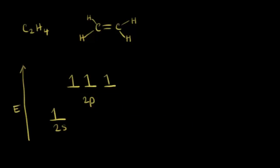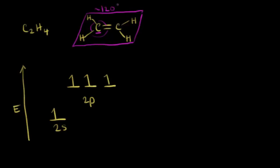In an earlier video, we saw that when carbon is bonded to four atoms, we had sp3 hybridization with a tetrahedral geometry and an ideal bond angle of 109.5 degrees. If we look at one of the carbons in ethene, we don't see the same geometry. The geometry of the atoms around this carbon happens to be planar, so actually this entire molecule is planar, with bond angles close to 120 degrees. This carbon is bonded to only three atoms — a hydrogen, a hydrogen, and a carbon — so we must need a different hybridization for each of the carbons present in the ethylene molecule.